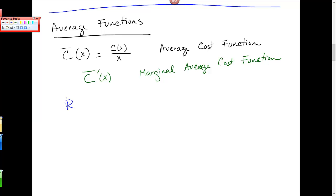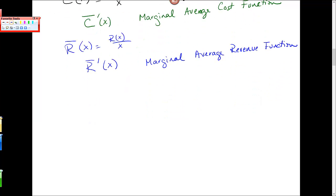Similarly with revenue, you have an average revenue function, R̄(x) = R(x)/x. When you take the derivative... divide by x first, and then take the derivative, it's the marginal average revenue function. And same with profit. Average profit function, and then P̄'(x) is the marginal average profit function.